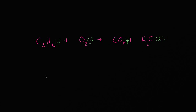Now we have another combustion reaction. Instead of ethylene, we now have ethane, C2H6, which has two carbons and six hydrogen atoms in each molecule. Ethane gas is reacting with molecular oxygen in gaseous form, and they combust to form carbon dioxide gas and liquid water.